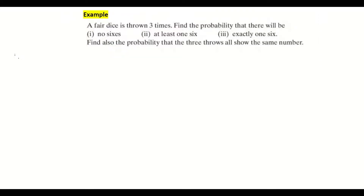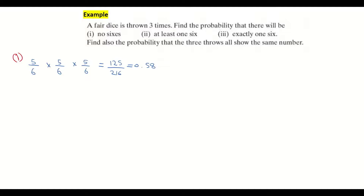Part one is asking us to find, on the three throws of this dice, what's the probability of getting no sixes? A dice has six sides, and on one of them is a six, while on the other five there are no sixes. So the probability of not getting a six is 5/6 on the first throw, multiplied by 5/6 on the second throw, which is also independent, multiplied by 5/6 on the third throw. When I multiply them, I get 125/216, which is 0.58 — a 58% chance of not getting a six when you throw a dice three times.